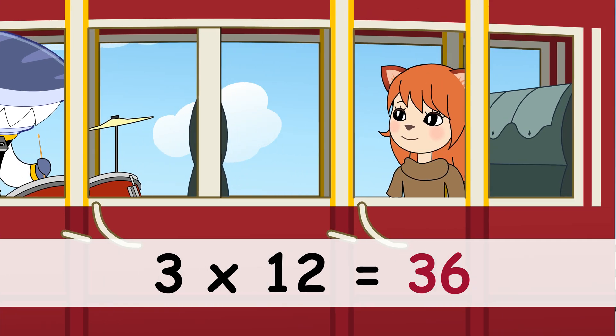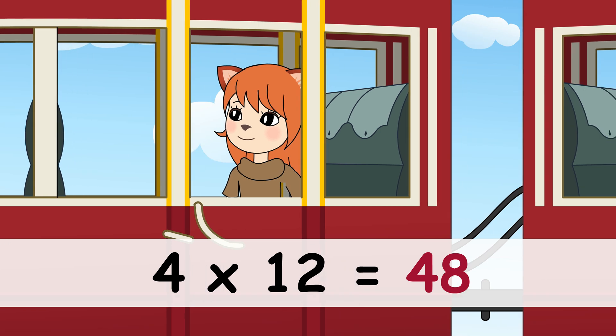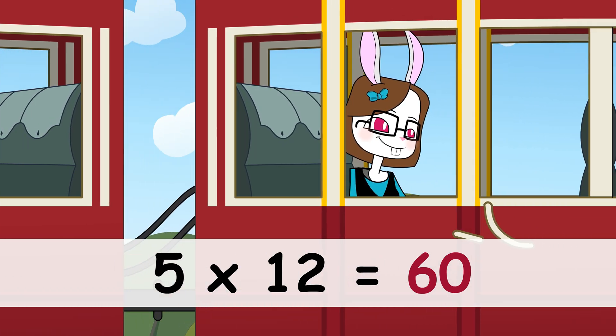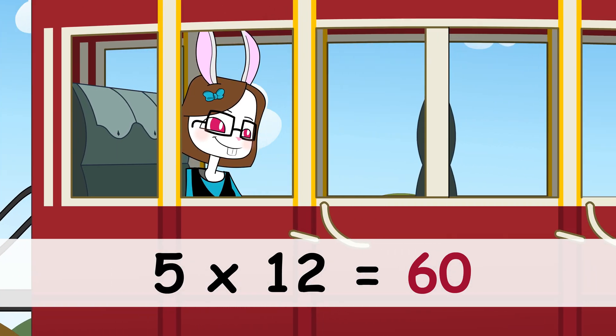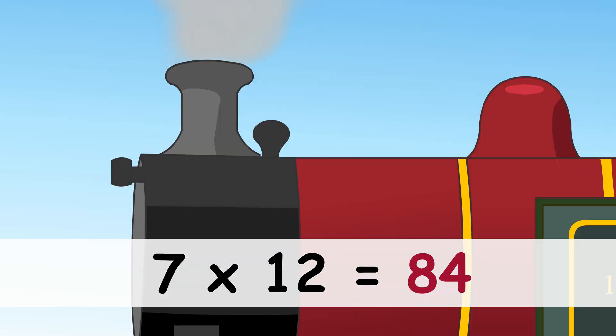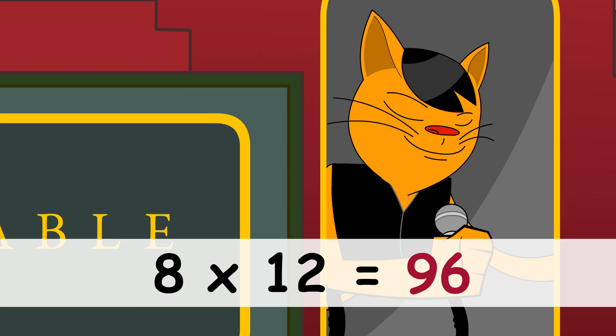3 times 12 is 36. 4 times 12 is 48. 5 times 12 is 60. 6 times 12 is 72. 7 times 12 is 84.